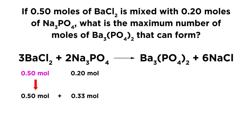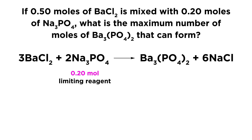The thing is, we do not have 0.33 moles of sodium phosphate — we only have 0.2 moles. So it looks like sodium phosphate is probably going to run out before all the barium chloride has a chance to react. By contrast, 0.2 moles of sodium phosphate will need three halves as many moles of barium chloride — a three to two ratio, essentially a time and a half — which would be 0.3 moles of barium chloride. We have more than that, which means all the sodium phosphate will run out and we'll have barium chloride left over. So sodium phosphate is the limiting reagent and barium chloride is the reagent in excess.